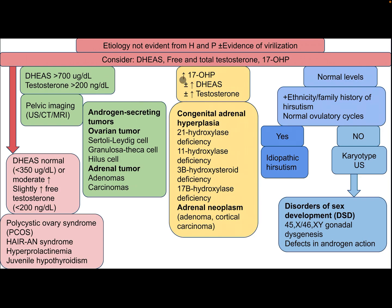If there is elevation in 17-hydroxyprogesterone, with or without elevation in DHEA and with or without elevation of testosterone, the differential diagnosis includes congenital adrenal hyperplasia such as 21-hydroxylase deficiency, 11-hydroxylase deficiency, 3-beta-hydroxysteroid dehydrogenase deficiency, 17-beta-hydroxylase deficiency, or adrenal neoplasm including adenoma or cortical carcinoma.